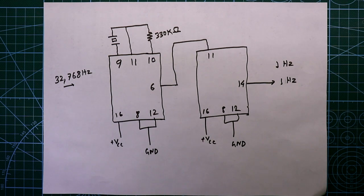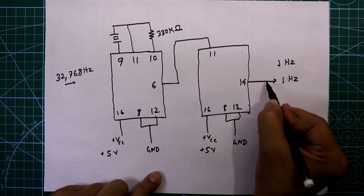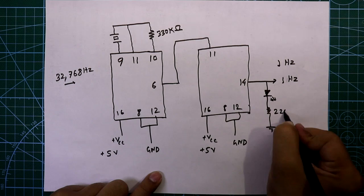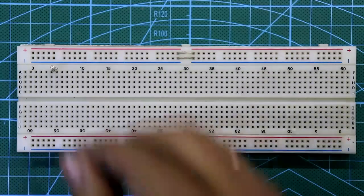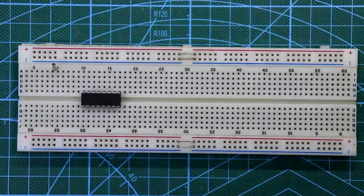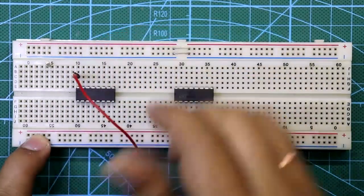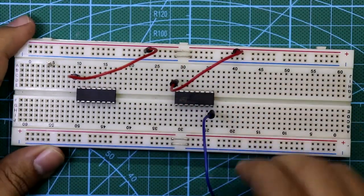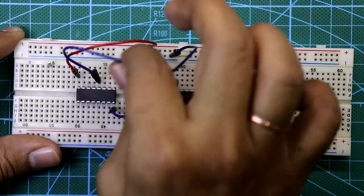This is a very simple circuit. On the breadboard, I am applying 5V. From pin 14 I'm connecting an LED with a 220 Ω resistor to detect the output. Placing the crystal oscillator — it is very small. Now placing the second 4060 IC. Pin 16 goes to the positive rail for both ICs.